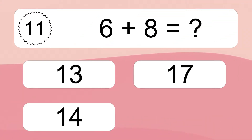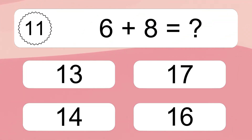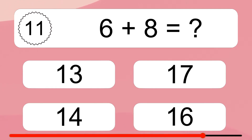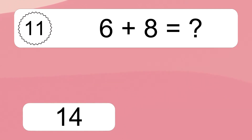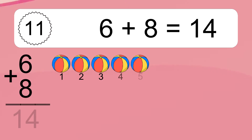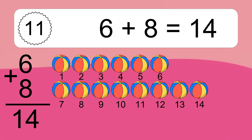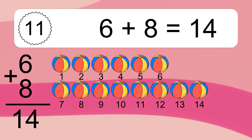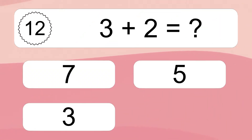6 plus 8 equals what? 6 plus 8 equals 14. Let's count it. 1, 2, 3, 4, 5, 6, 7, 8, 9, 10, 11, 12, 13, 14.